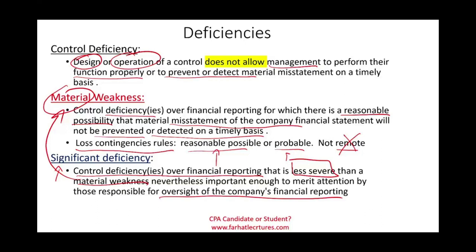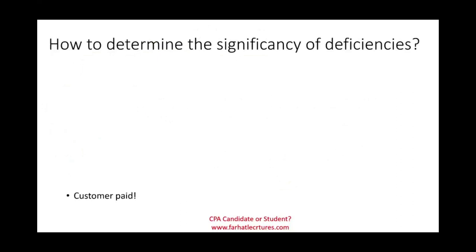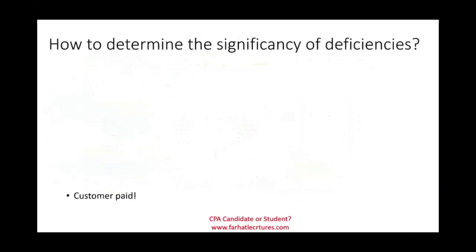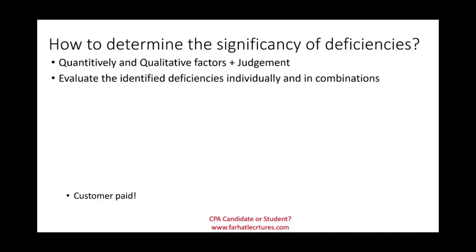How do we determine whether a deficiency is a material weakness or significant deficiency? We use qualitative and quantitative factors plus judgment. You have to evaluate deficiencies individually and in combination, because individually they may not be significant, but when combined they could be. You have to look at the magnitude and severity of the possible misstatement resulting from the deficiency.